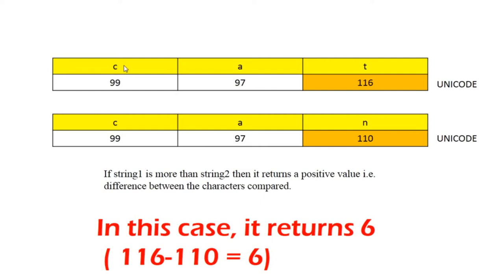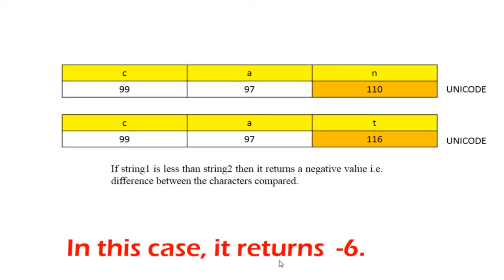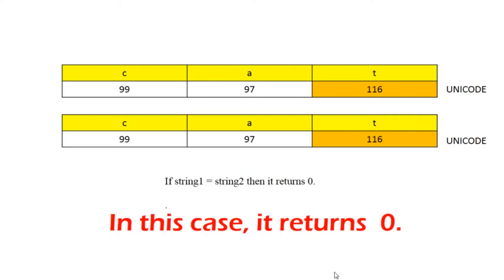Let us understand this with a table. First string is "cat", second string is "can". Unicode values: 'c' is 99, 'a' is 97, 't' is 116; and for the second string: 'c' is 99, 'a' is 97, 'n' is 110. The first string is greater, so 116 minus 110 equals 6. For the reverse — "can" vs "cat" — the first string is less, so 110 minus 116 returns minus 6. If both strings are equal, it returns 0.